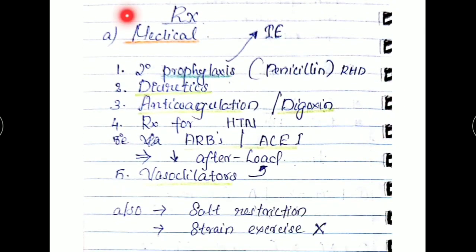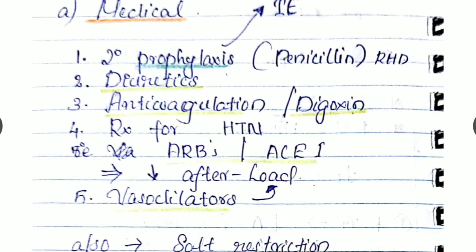Finally, the treatments. It may be medical and surgical. But reminding you that surgical treatment is the treatment of choice for severe symptomatic mitral regurgitation. But medical treatment includes prophylaxis against infective endocarditis and rheumatic heart disease.